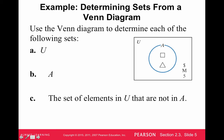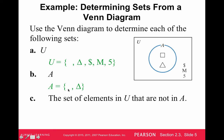Here's an example: determining sets from a Venn diagram. The universal set is depicted by the rectangle. Set A is the set of the square and the triangle, and the complement of A is the money symbol, the capital M, and 5. So the universal set is going to be everything in here: square, triangle, money, M, and 5. The square is not showing up for some reason, but it's there. A is the set of square and triangle. The set of elements in U that are not in A — that would be the money symbol, M, and 5.